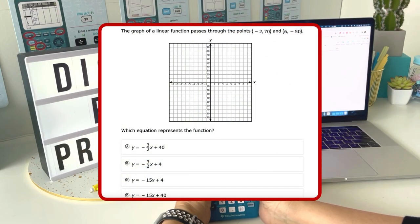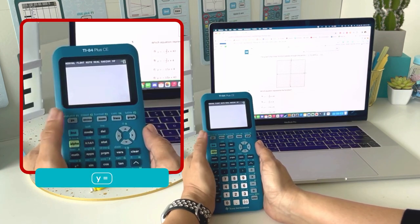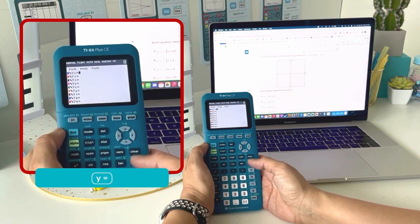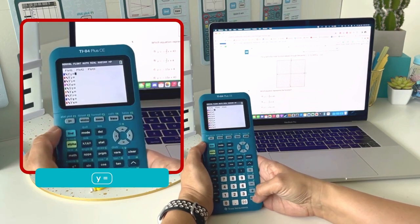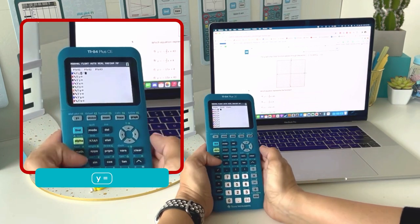This digital exam question asks us to find the equation of a line given two points. First thing I'm going to do is enter in all four equations. Go to y equals and type in the functions.